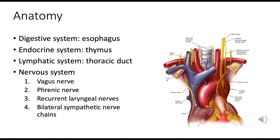The nerves pertinent to the nervous system within the thoracic cavity include the vagus nerve, phrenic nerve, recurrent laryngeal nerves, and bilateral sympathetic nerve chains.